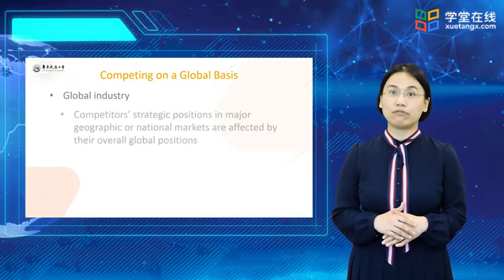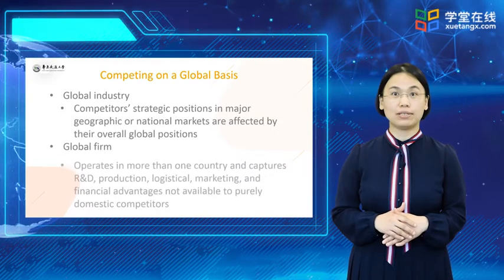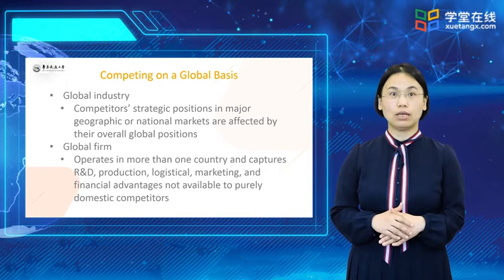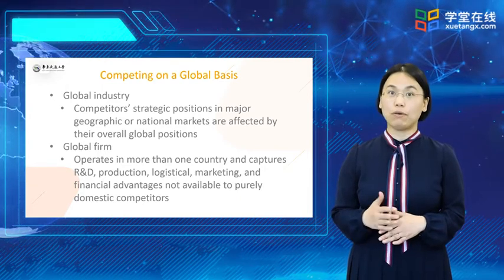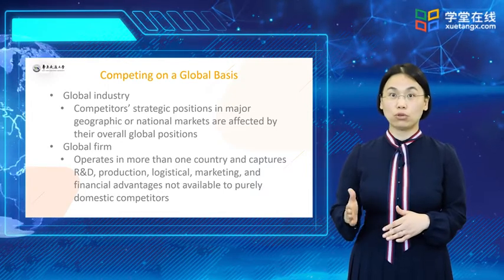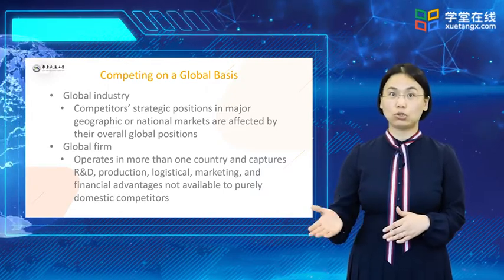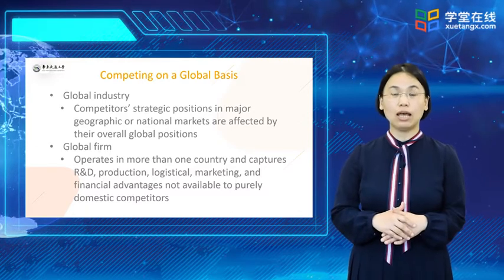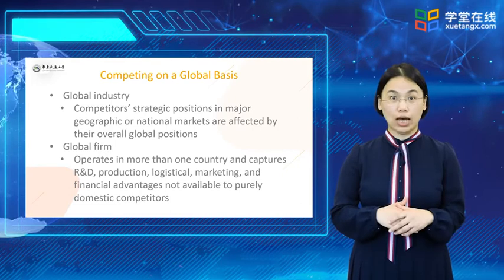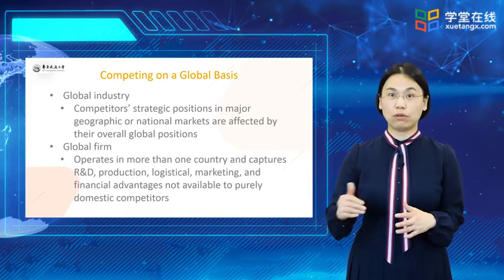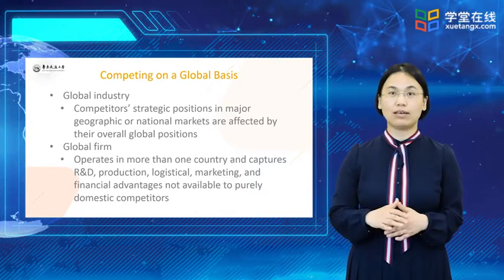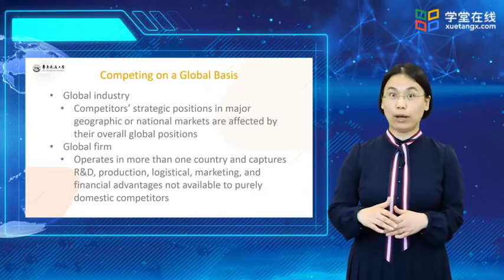Global competition is intensifying in more productive categories as new firms make their mark on the international stage. Competition from developing market firms is also heating up. Although some US businesses may want to eliminate foreign competition through protective legislation, the better way to compete is to continuously improve products at home and expand into foreign markets. Global firms plan, operate, and coordinate their activities on a worldwide basis.